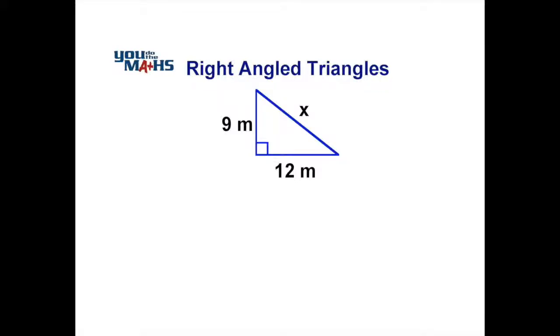When trying to find the unknown side of a right angle triangle, the first thing we do is identify the sides. We can see here that x is away from the right angle, so that's the hypotenuse.